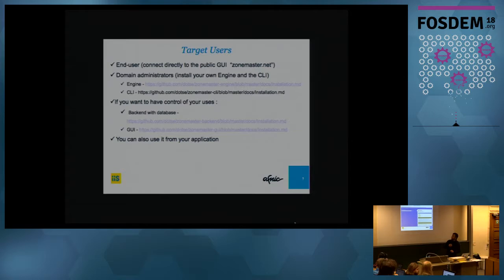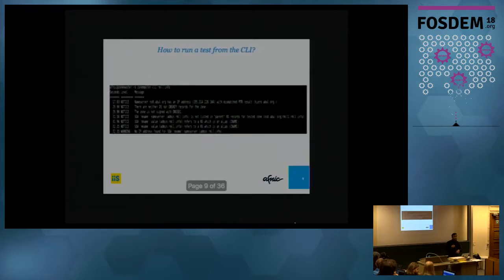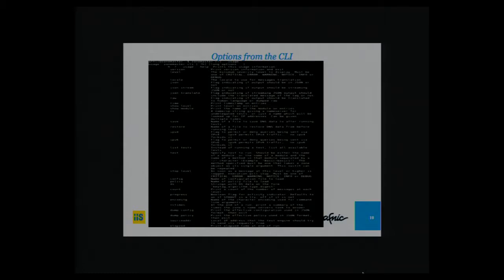Here is an example of rml.info tested using the graphical user interface — the website — and you can see there is an issue indicated by the yellow color. For the CLI, you install it on your own system and run your domain using the ZoneMaster CLI. There are different levels of customization: for example, if you want to test only with IPv4, if you want to run certain tests and not others, or if you want to change the debug level. You can use all these options with the CLI.